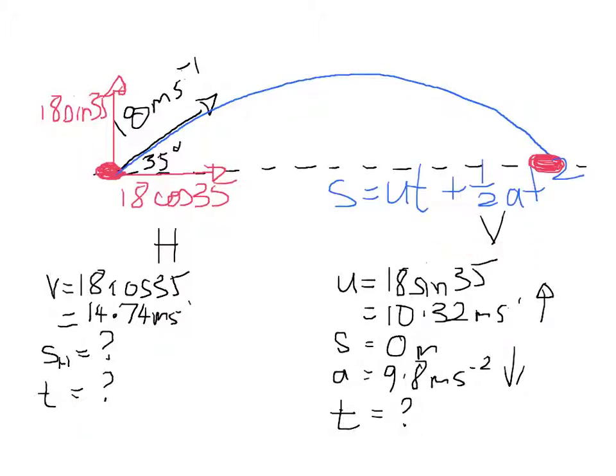So what we'll do is we'll plug this data here into s equals ut plus half at squared. We'll do some maths and solve for the value of t. Then we'll substitute that value over here. Oh no, we only want to find out the time, don't we? It's part b. This is how we work out part b. We'll work out the range or the horizontal displacement.